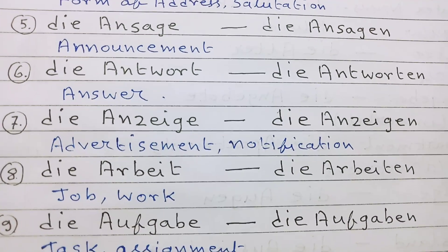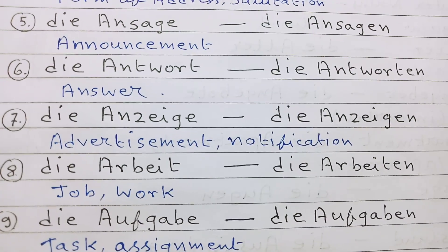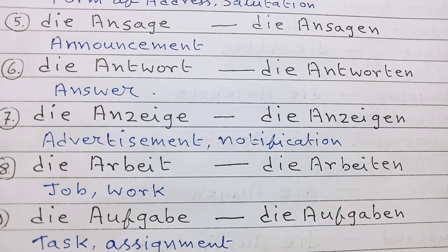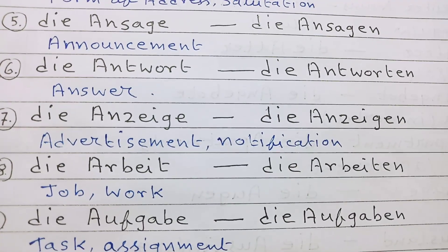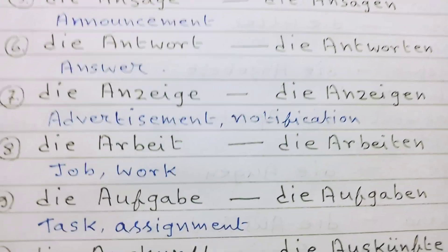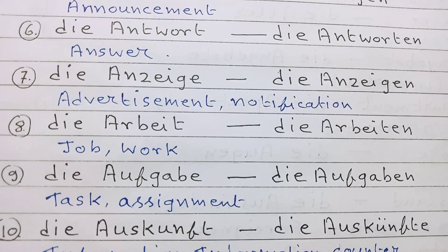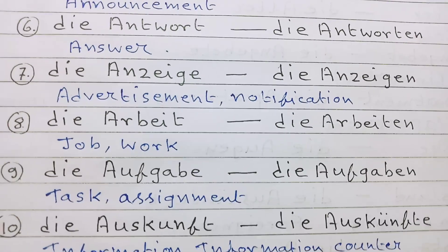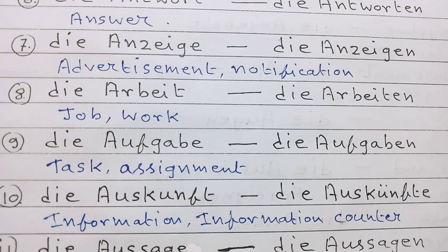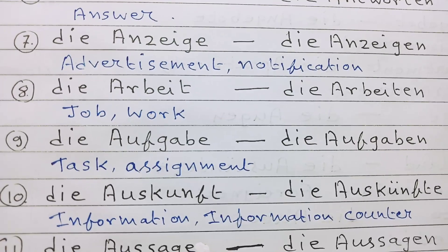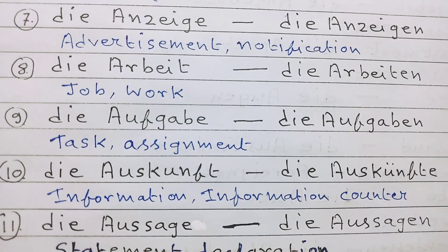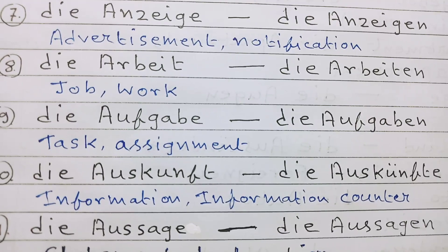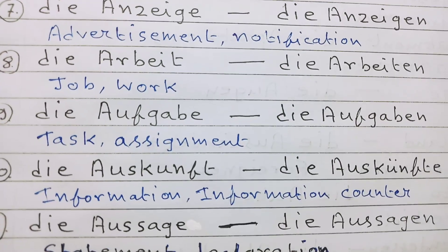Number 7: die Anzeige, die Anzeigen — advertisement, notification. Number 8: die Arbeit, die Arbeiten — job, work. Number 9: die Aufgabe, die Aufgaben — task or assignment.